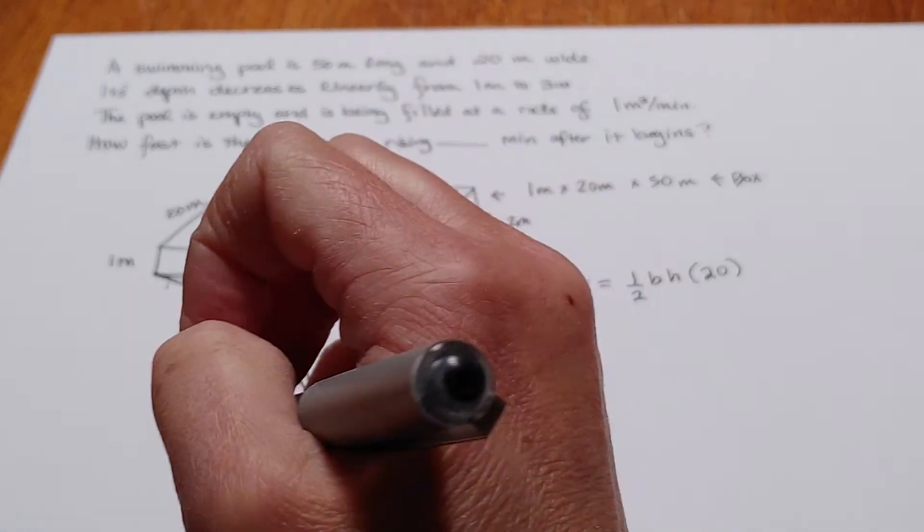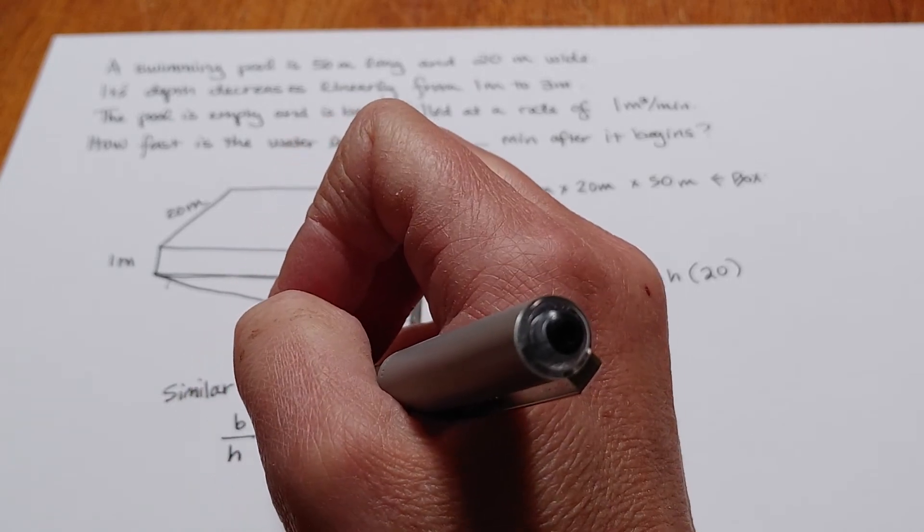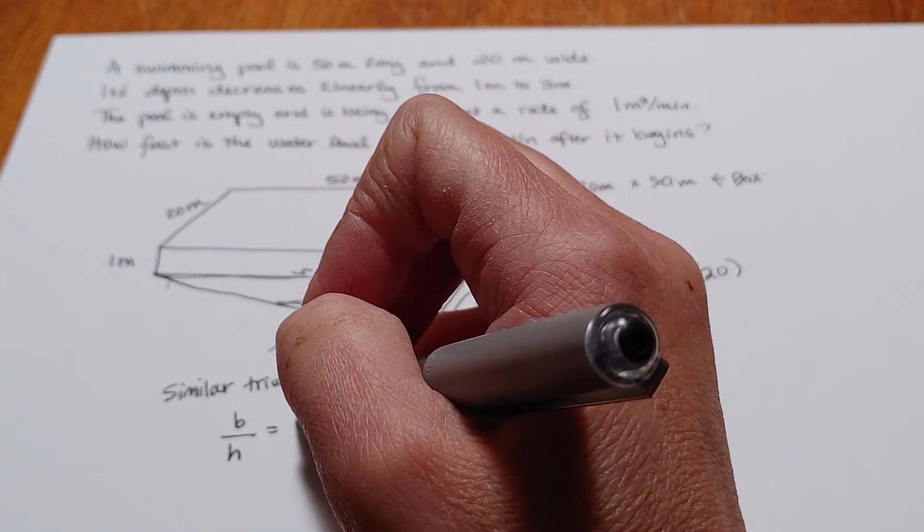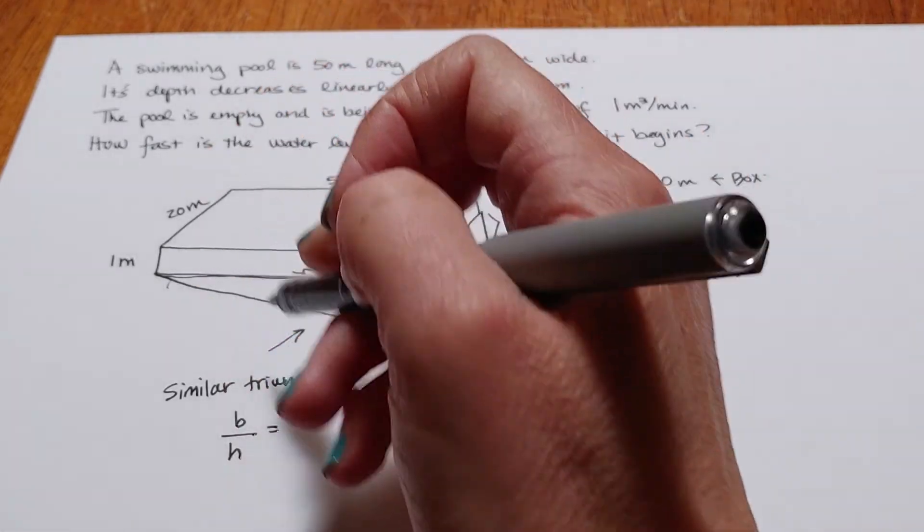So at any particular moment in time, the base of this triangle to the height of the triangle will be the same as the total of 2 as it is to 50.